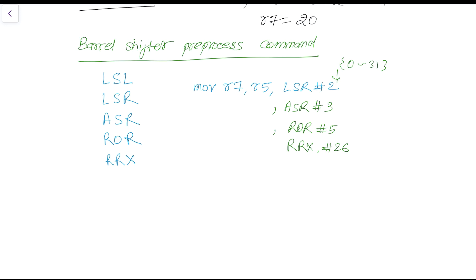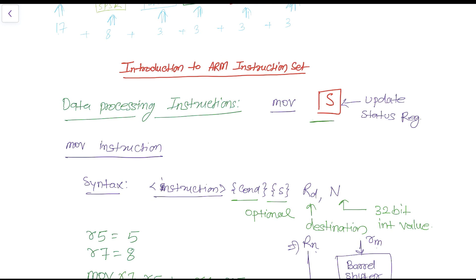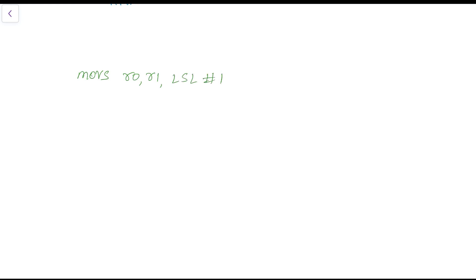Now let's discuss using the 'S' suffix with the Move instruction. By adding 'S' to the Move instruction we get MOVS. For example: MOVS r0, r1, LSL #1. As mentioned, the 'S' suffix means the status register will be updated based on the result of the operation.